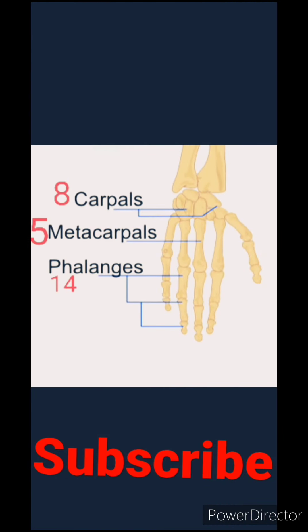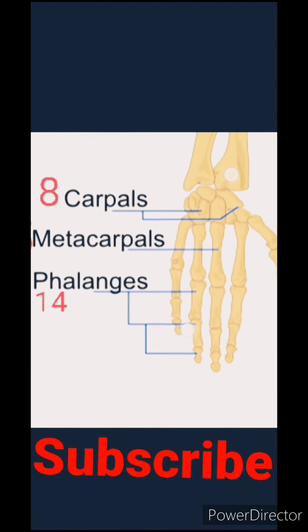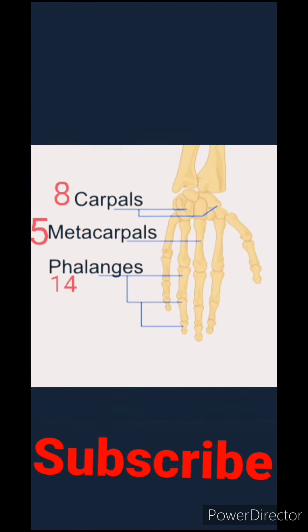After that we talk about the wrist bones — we have a total of 8 bones which are called carpals. After our palm, we have 5 bones which are called metacarpals.